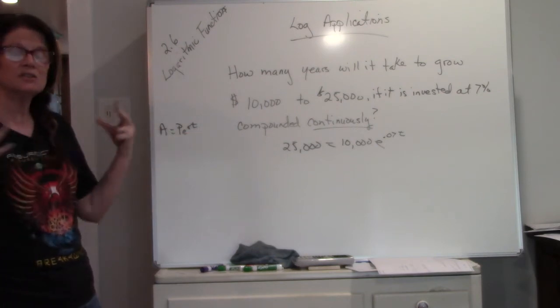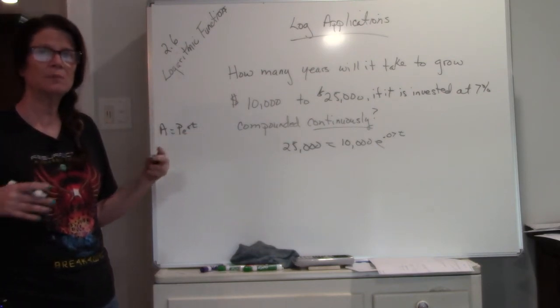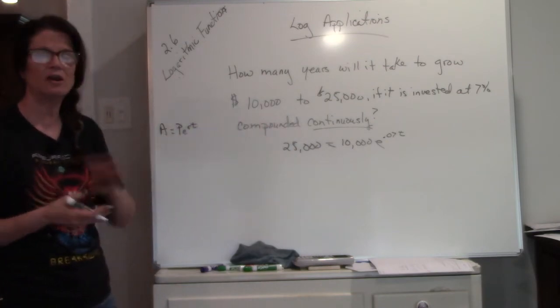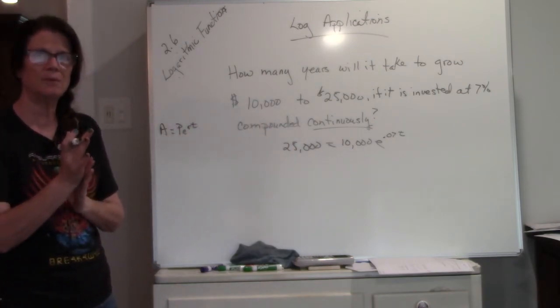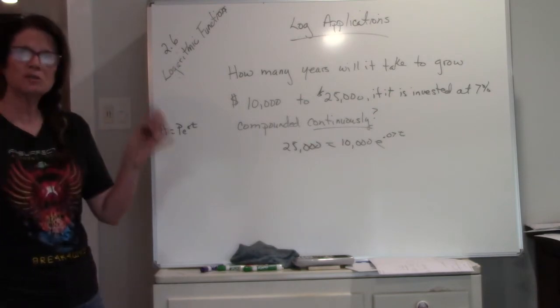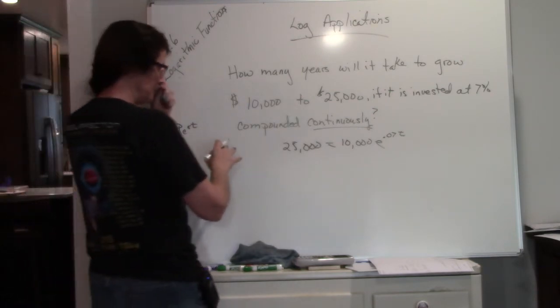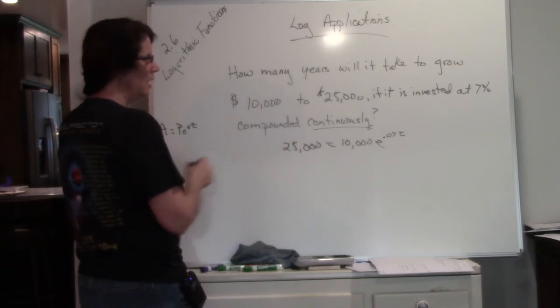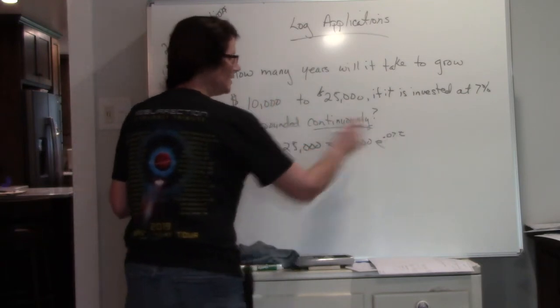So this is where we are going to be able to use our inverse operations in order to solve, because now our unknown is in the exponent position. So here's the process. I have all the information in the right spots. The goal is to get T by itself.